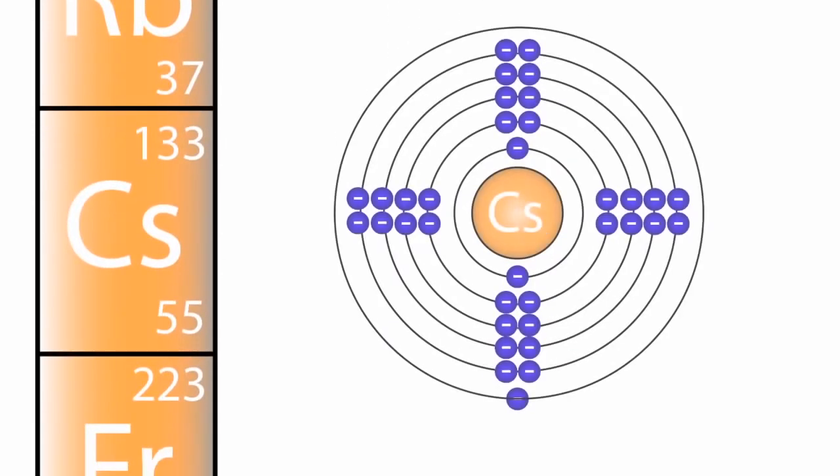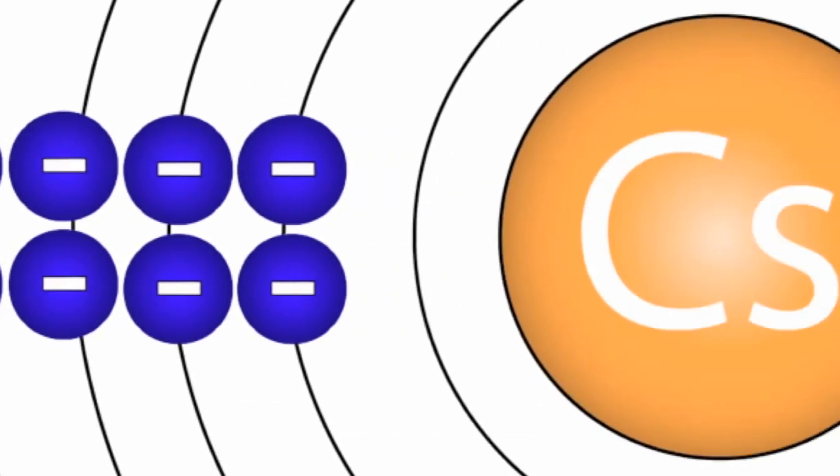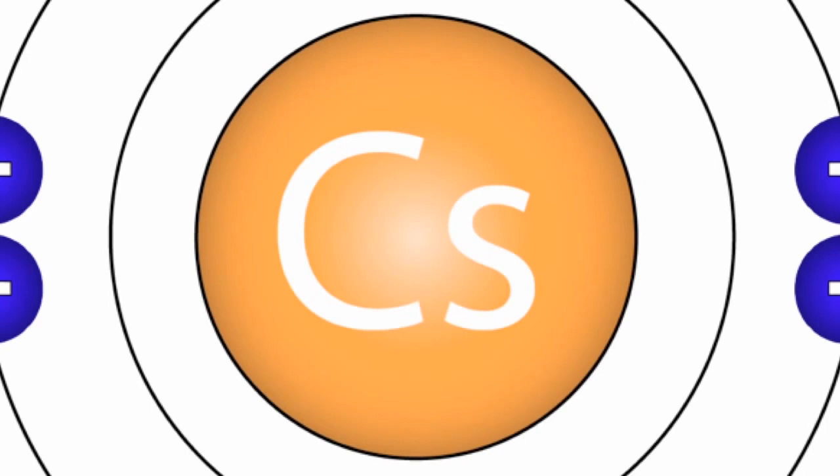This is why caesium is the most reactive metal we know. The reason for this is the outer electron is a long way away from the nucleus and therefore is easily picked off.